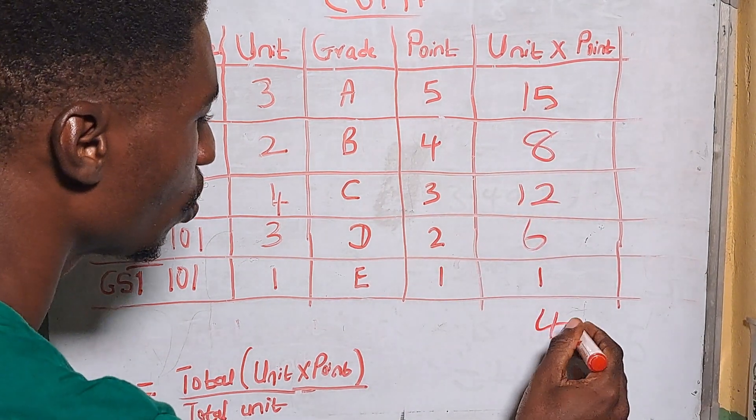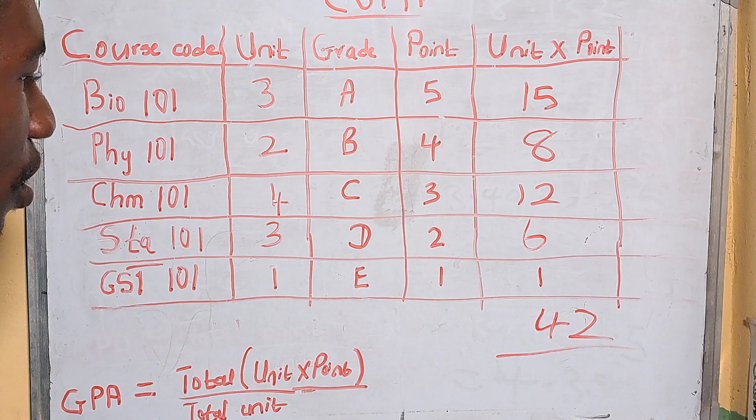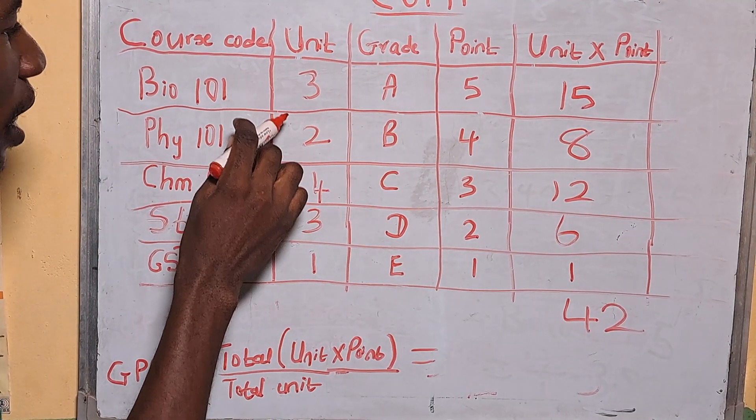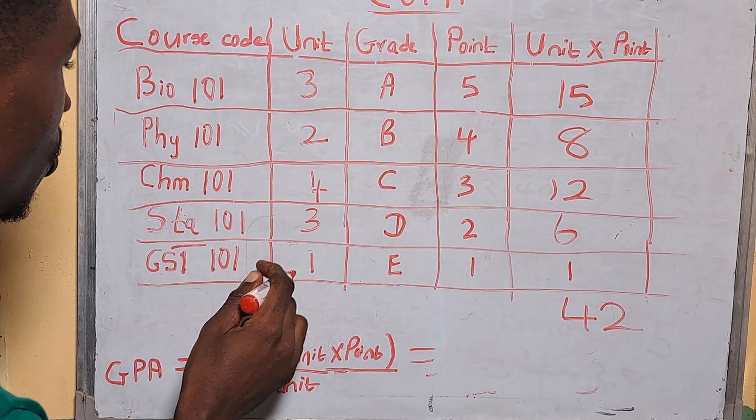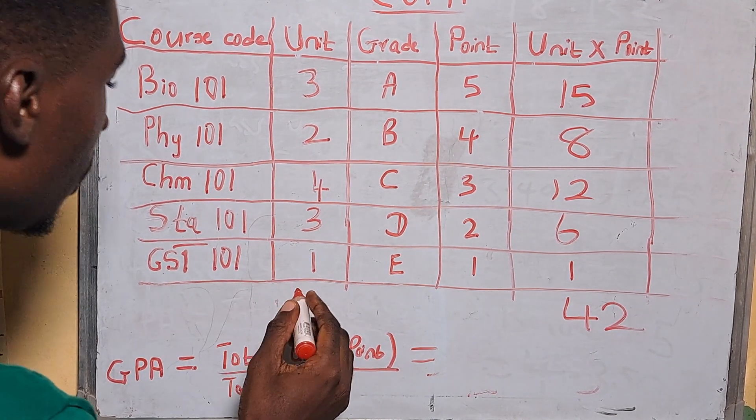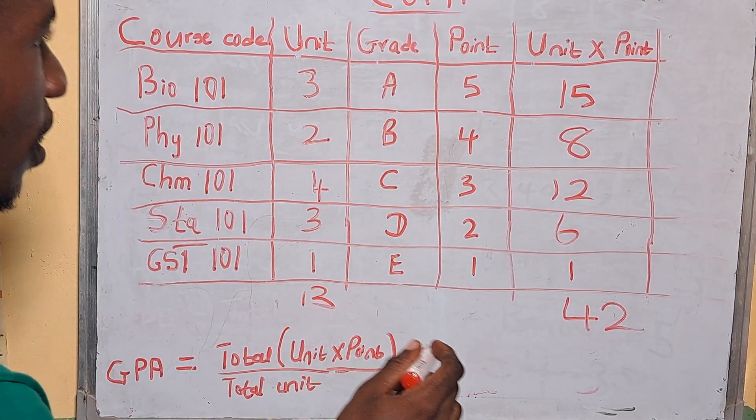So you add up this, so by the time you add up this you get 42 as your total credit load grade. Then the units, you are going to add up the units for the courses you are taking for the semester and here we have 13.